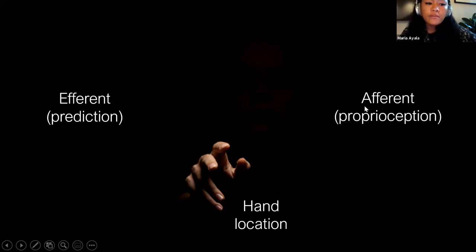So here we use our new paradigm to isolate efferent-based estimates of hand position from proprioception, and we had over 220 healthy participants, both younger and older adults over the age of 55, and we had them localize their hand after actively reaching in a self-chosen direction.